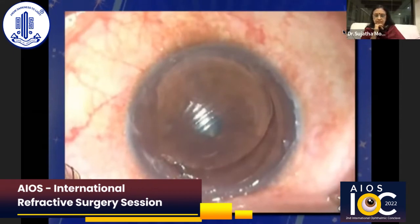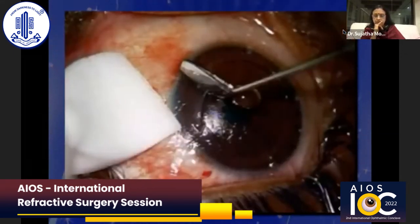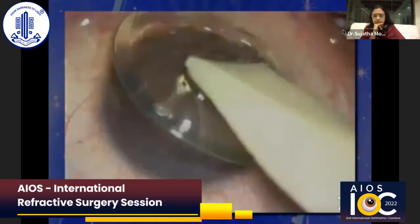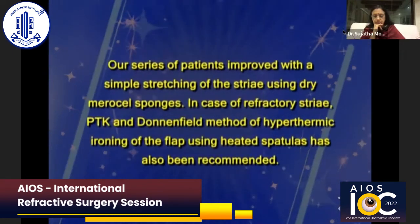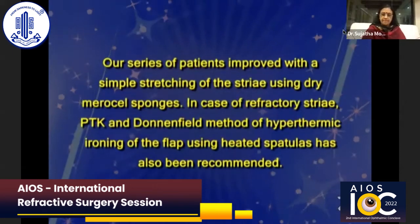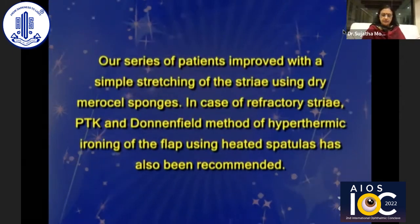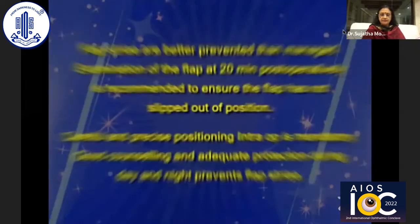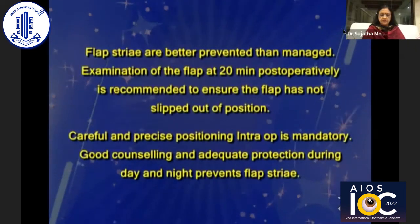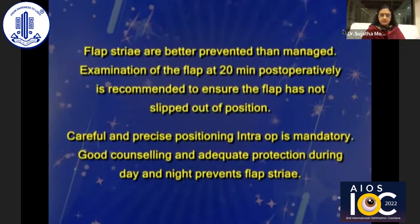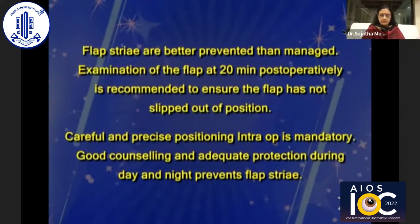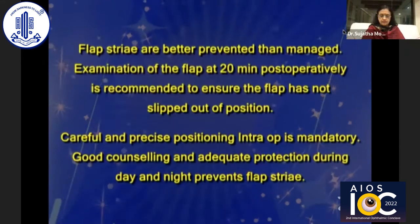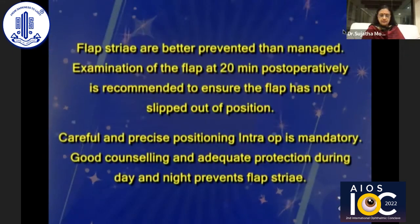In cases with visually significant striae, early intervention, meticulous removal of epithelium from stroma, application of suture and bandage contact lens gives best results. Our series of patients improved with simple stretching of striae using dry Merocel sponges. In case of refractory striae, PTK and the Donenfield method of hyperthermic ironing of the flap using heated spatulas has also been recommended. Flap striae are better prevented than managed. Examination of the flap at 20 minutes postoperatively is recommended to ensure the flap has not slipped. Good counselling and adequate protection during day and night lowers the incidence of flap striae.